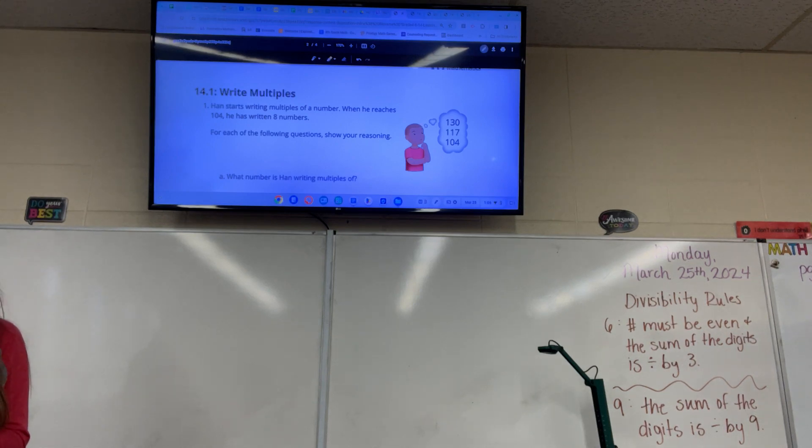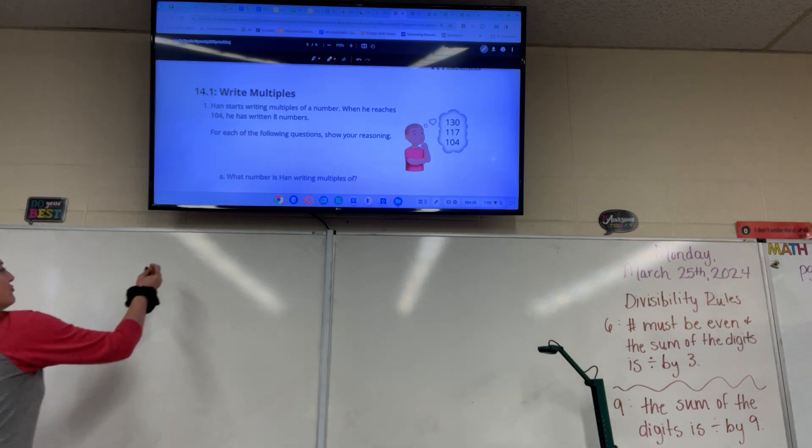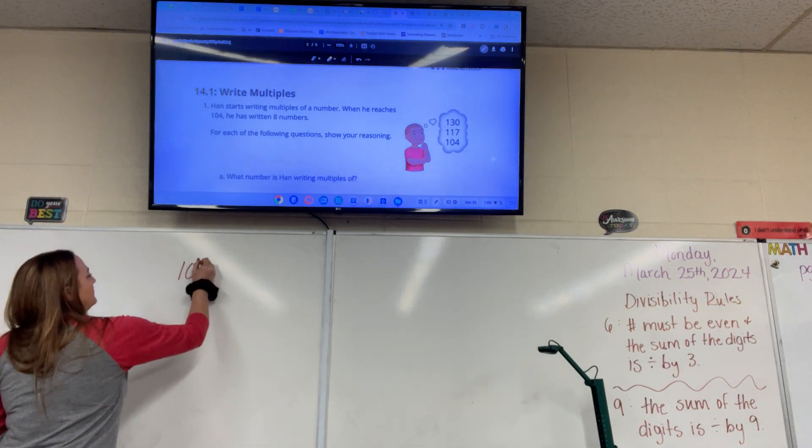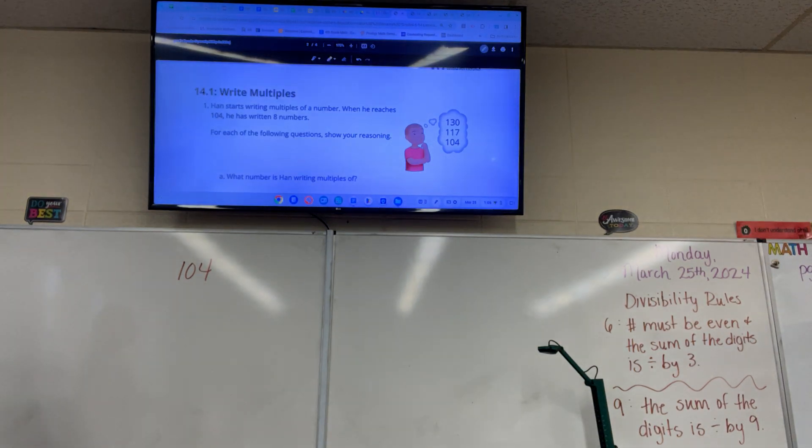Looking at it, to see what numbers, look for where you see 104 as the 8th multiple. Rylan, 8 times 13. So he's doing multiples of 13, right?